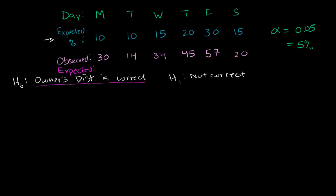With 200 total customers, the expected number on Monday is 10% of 200 = 20 customers. Tuesday: another 10%, so 20 customers. Wednesday: 15% of 200 = 30 customers. Thursday: 20% of 200 = 40 customers. Friday: 30% of 200 = 60 customers. And Saturday: 15% of 200 = 30 customers. This is the expected count for each day if the owner's distribution is correct.